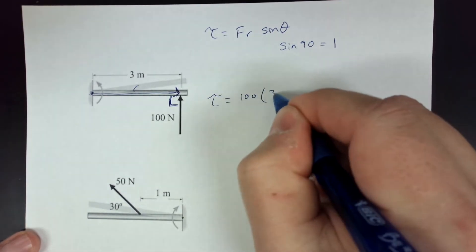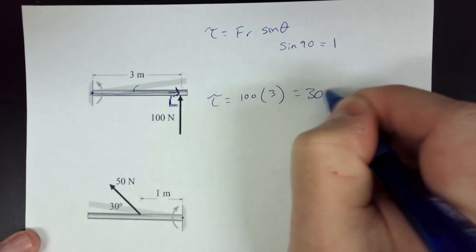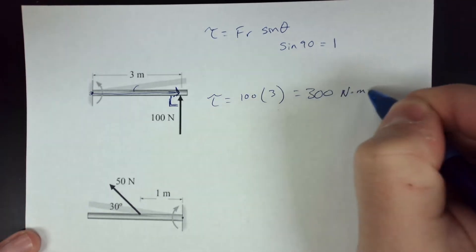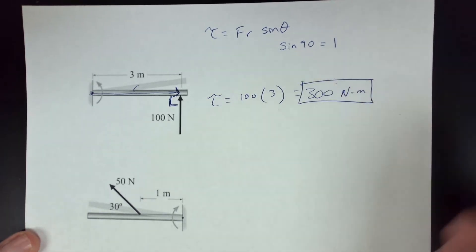So that's 100 times 3, which is 300 Newton meters.